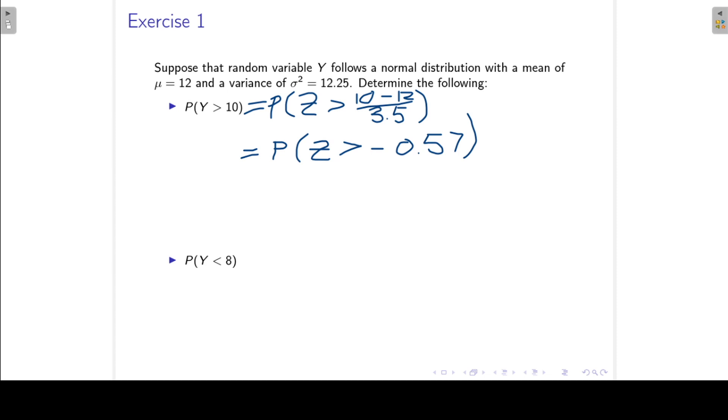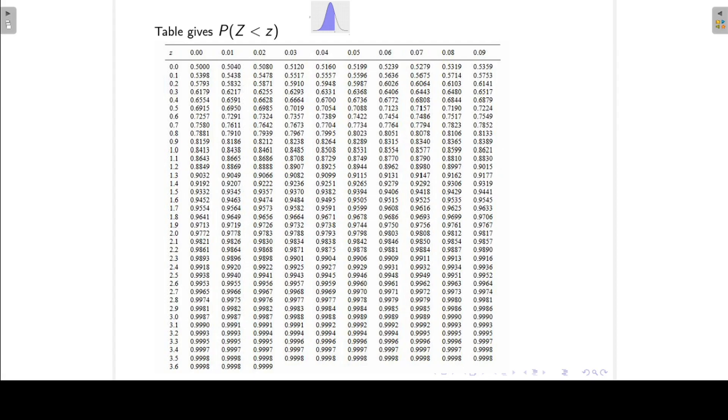Now if we draw our little standard normal graph, we want to find the area to the right of negative 0.57. So we would like to find the area to the right of minus 0.57. Now because the normal distribution is symmetrical, that would be exactly the same as the probability that Z is less than positive 0.57. And now we can look this up in our tables. 0.57 gives us 0.7157.